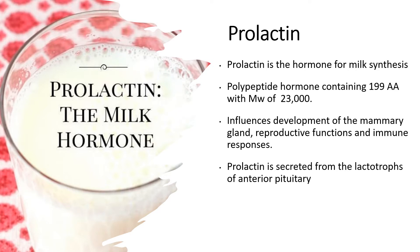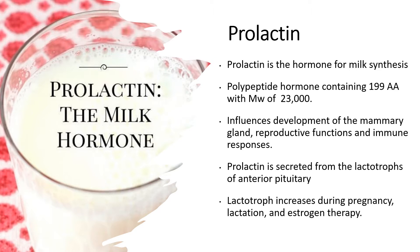Prolactin is secreted from the lactotropes of the anterior pituitary, which constitute about 10 to 25 percent of the total secreting cells of the gland. However, this lactotrope population increases during pregnancy, lactation, and when estrogen therapy is given. Prolactin has a structural similarity with human growth hormone.